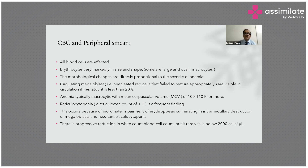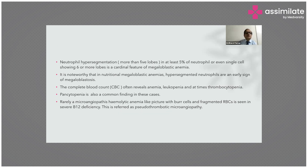There is progressive reduction in white blood cell count — leukopenia, less than 2,000 cells per microliter. Neutrophil hypersegmentation, with more than 5 lobes in at least 5% of neutrophils, or even more than 6 lobes, is a cardinal feature of megaloblastic anemia. In nutritional megaloblastic anemia, there are hypersegmented neutrophils and megaloblastosis.